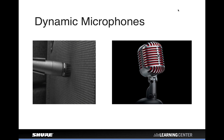Starting with dynamic microphones — you can see a couple of popular ones here: the SM57 on the left and the 55 Unidyne, the latest incarnation being the 5575 limited edition on the right. These are workhorses of the microphone industry. Dynamic microphones are very popular because they tend to be very rugged, reliable, and relatively low cost, especially when you consider how good they sound.